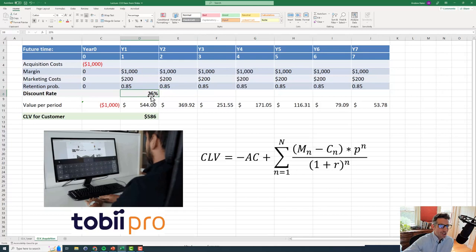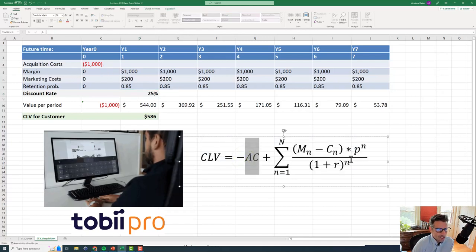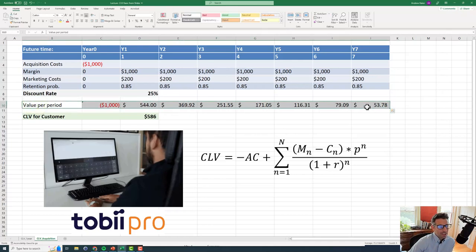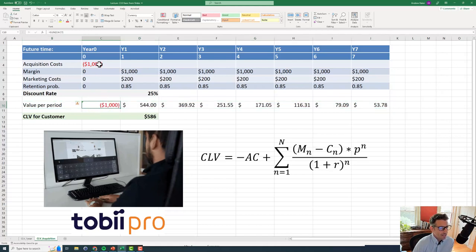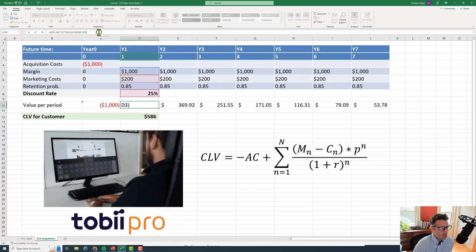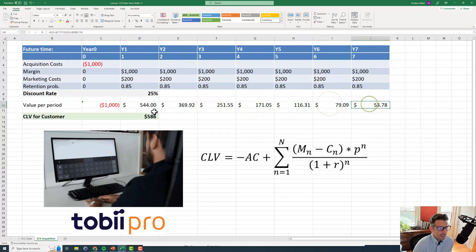Also, we have our discount rate. So we have to discount our future earnings by 25% or also our future costs for that matter. And with all these pieces, we have our acquisition costs, we have our margin, we have our marketing costs, we have our probability of being active and we have our discount rate. So since we have all of these things all together, we can certainly down here in value per period, we can now perform the computation of calculating customer lifetime value. We have our $1000 here, our costs. And then in year one, you look up at this formula here, you'll see that we're taking the margin minus the marketing costs times D7, which is retention probability to the power of future year, year one. And then we divide all of that by the discount rate one plus the discount rate to the power of one. So literally just in Excel building out this formula. And then we do that for year two, year three, four, five, six, and seven.